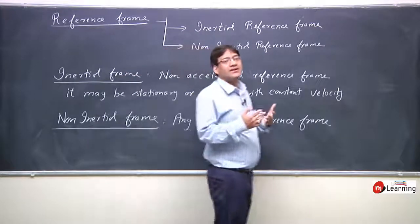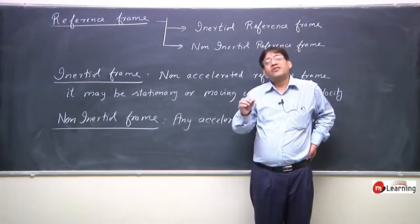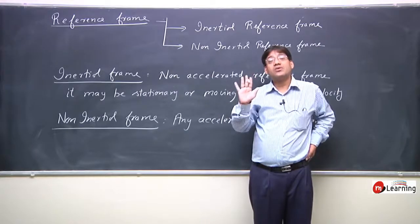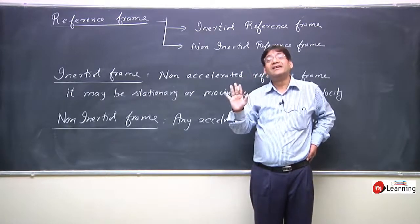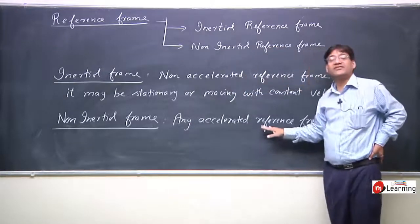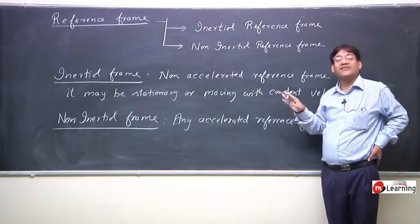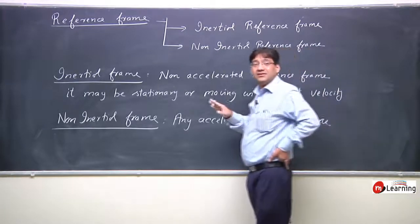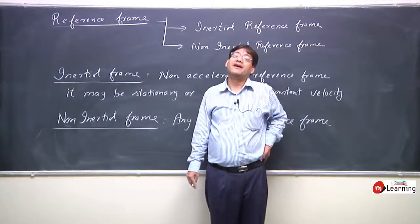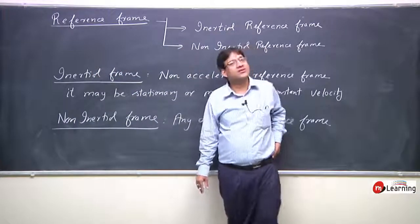Now we will observe circular motion from these two different reference frames. In the circular motion situation, the particle is constantly accelerated in the radially inward direction — that is an accelerated reference frame, and such an accelerated reference frame is always called a non-inertial reference frame.